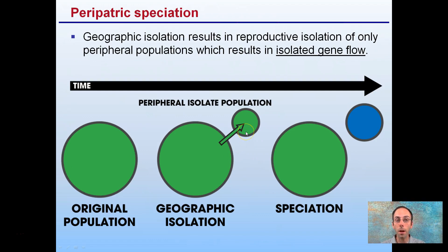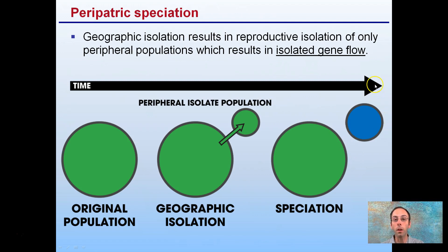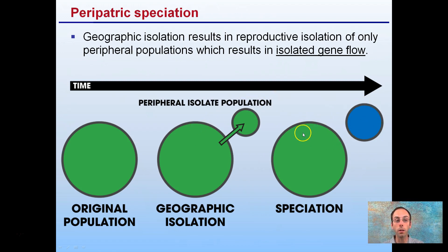Then we have peripatric speciation. This is where geographic isolation results in reproductive isolation of only peripheral populations, which does result in isolated gene flow. Here we have a subset of this population that's separated out, and we see it developing its own isolated gene flow relative to the original population. This geographic isolation occurs only for these peripheral populations — it's kind of broke off — and here we see development of the blue and the green species.